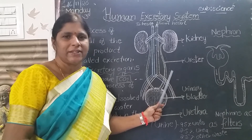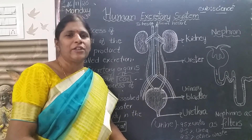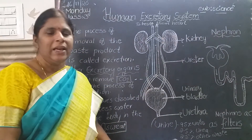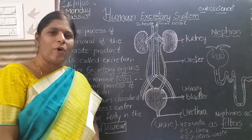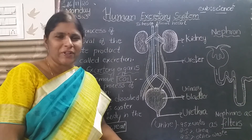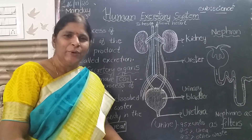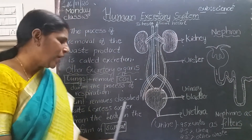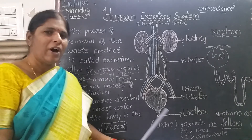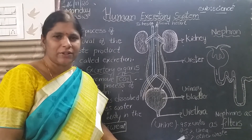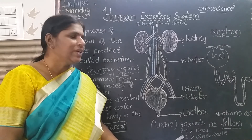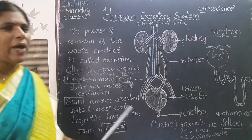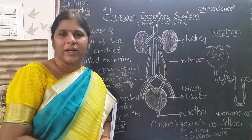Other organs also act as excretory organs. Lungs also remove carbon dioxide and water vapor during the process of respiration. Skin also removes dissolved salts and excess water from the body in the form of sweat through the sweat glands. So lungs and skin also act as excretory organs.